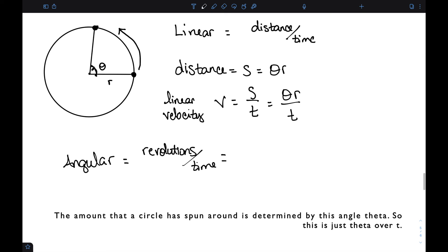The amount that a circle has been spun around is determined by this angle theta. So this is just theta over t and it's denoted by the Greek letter omega.